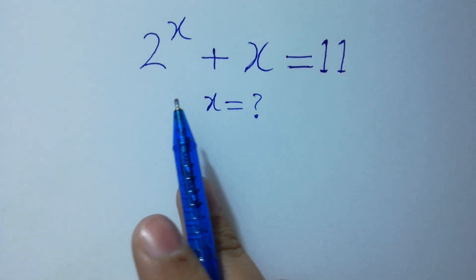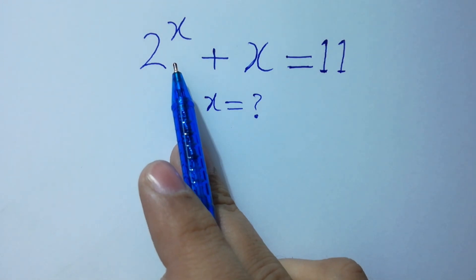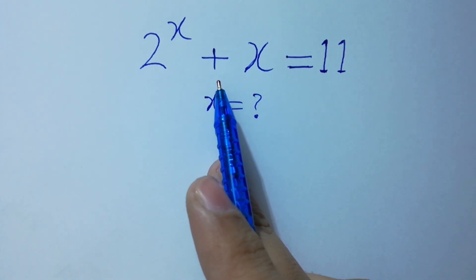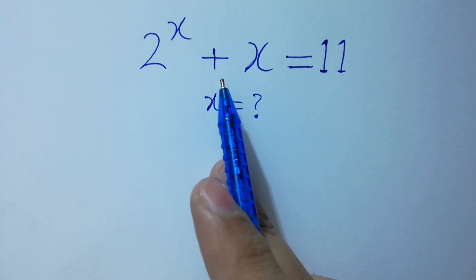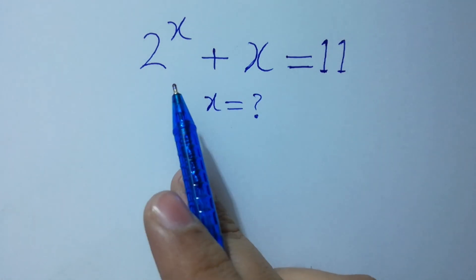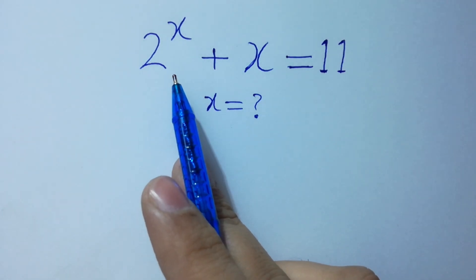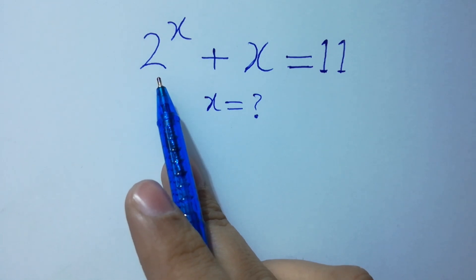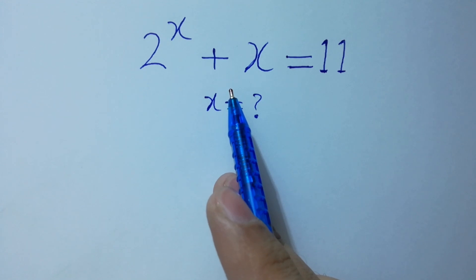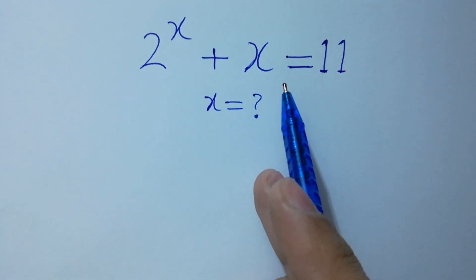If we put x equal to 1, we get 2 plus 1 which is 3. 3 does not equal 11. If I put x equal to 2, we get 2 squared = 4, 4 plus 2 = 6, which does not equal 11.